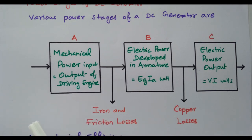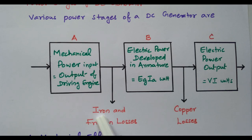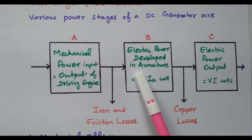When the armature part rotates, during that rotation we have friction loss and also loss happening in the iron core — in both the field winding core as well as the armature winding core. The remaining energy then goes to the next stage.